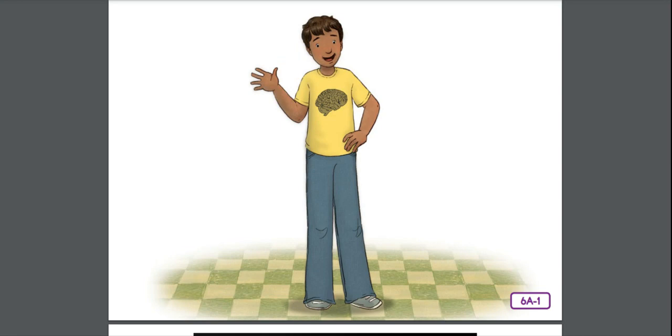Here's the first one. I am the building block for all living things. And there are over 200 types of me in the human body. The building block of all living things. What am I? I am a cell.